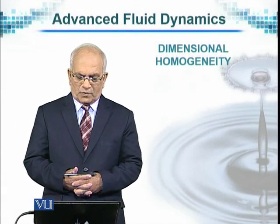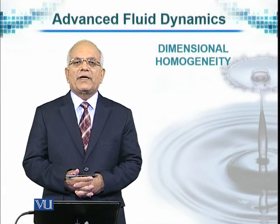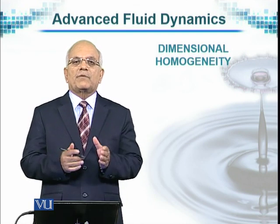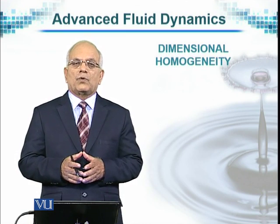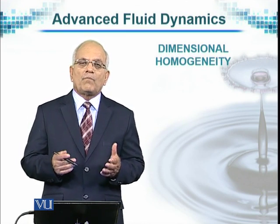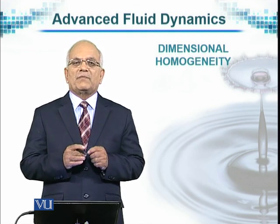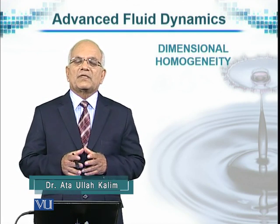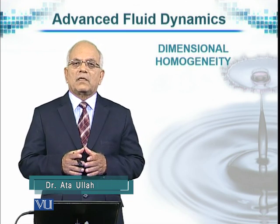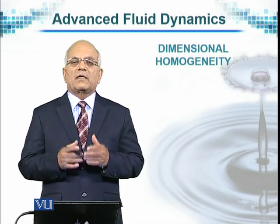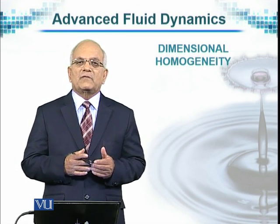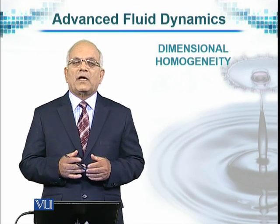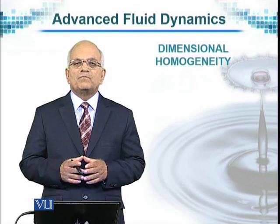We continue the discussion of dimensional homogeneity and carry out an example, an exercise. We see that each term of an equation must have the same dimension. There are two things to mention: one is each term should have the same dimension, and the second is that both sides of the equation should have the same dimensions. Later on, we will see how we can make things non-dimensionalized, that is, each term becomes dimensionless. Very simple technique, but we come to that later.